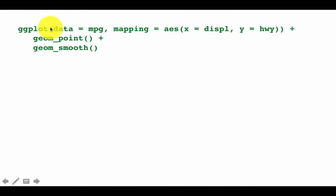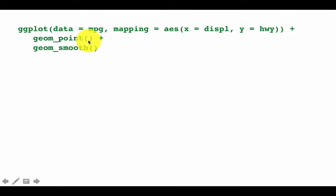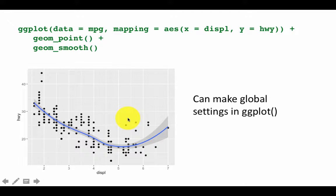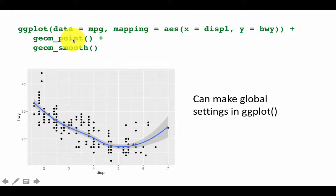The benefit is that whatever you specify in ggplot carries into both geoms, so you don't have to repeat any of them. However, if you want to add additional aesthetics — for example, color or line type — you can still add them to individual geoms as well. So you can make global settings in the ggplot function itself, and they automatically carry into the individual geoms, but you can override any of them in the individual geoms if you want.